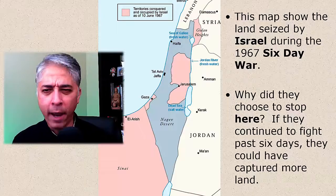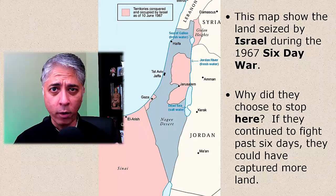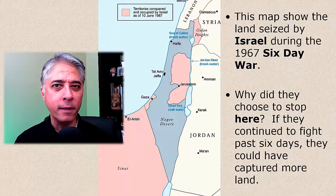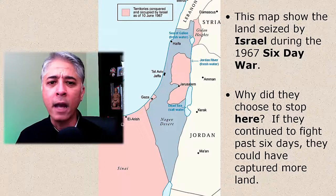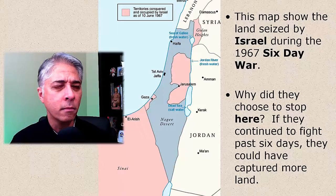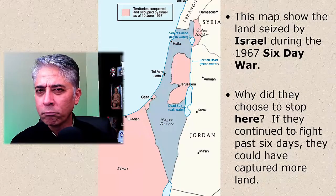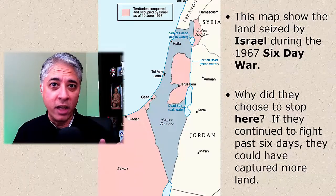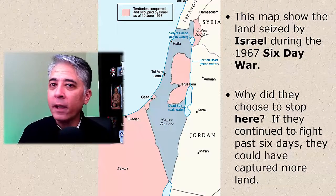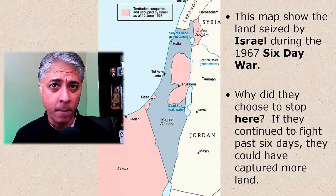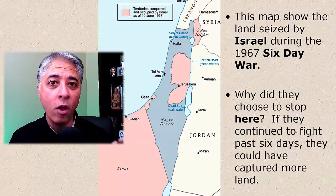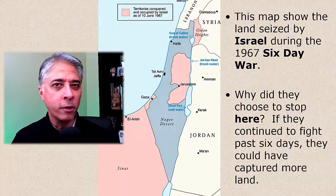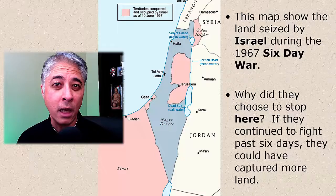If you look at the blue part of this map, that was the territory Israel controlled before the Six Day War. The pink areas are all the places that Israel seized from their enemies in just six days. They seized the Golan Heights from Syria, the West Bank from Jordan, and the Gaza Strip and the Sinai Peninsula from Egypt — all in six days. Which begs the question: why did they stop here? If they had fought a two-week war or a one-month war, they could have taken a lot more land. But they decided to stop here — that's all they wanted.